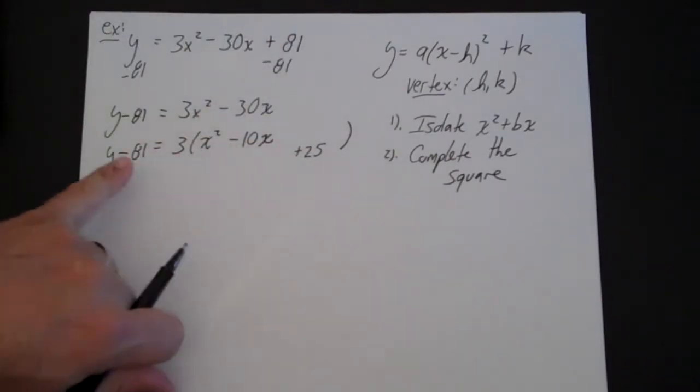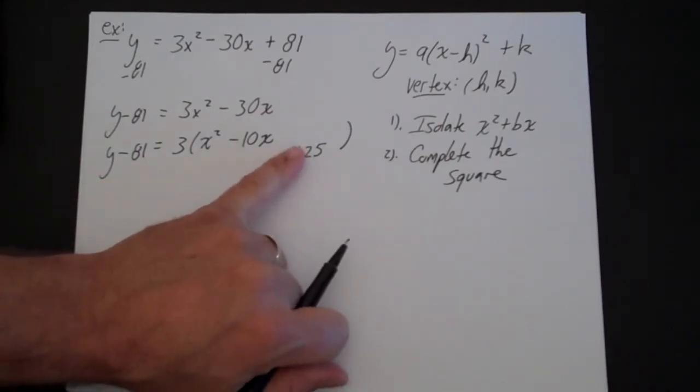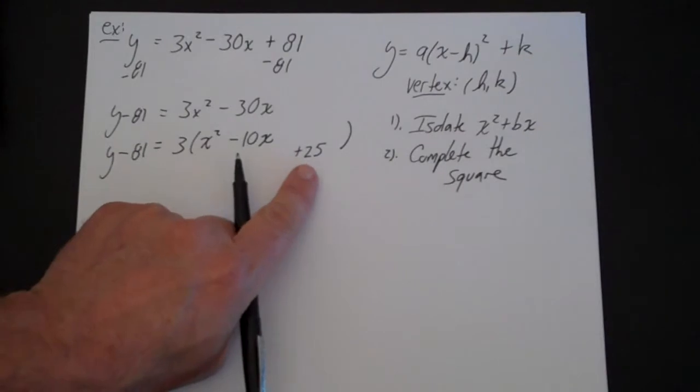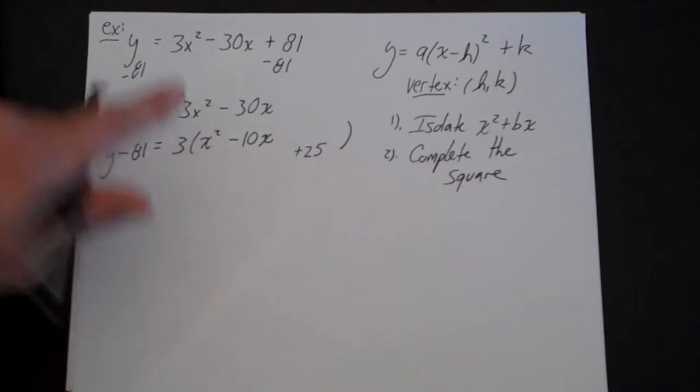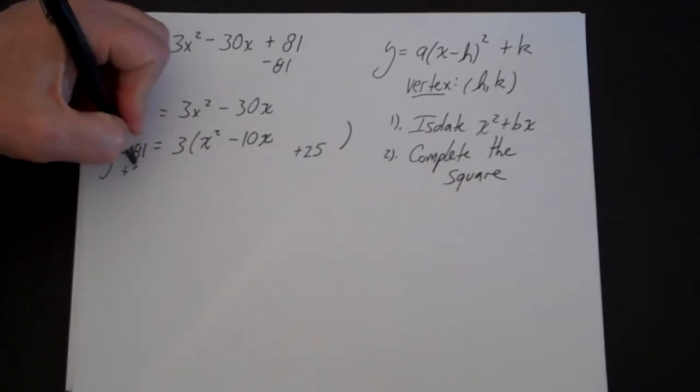Now, if I add 25 there, I have to do the same thing to this side, but I'm not really adding 25. Because this is inside the parentheses, I'm adding 25 times 3. 25 times 3 is going to be 75, so that means I'm going to add 75 to this side.